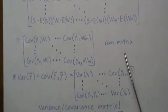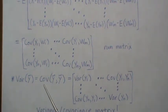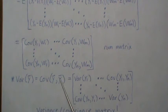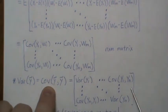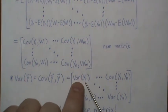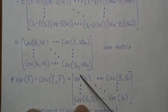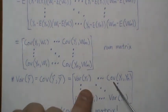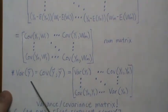The variance of a random vector y — the covariance of y with itself — produces an n×n matrix. The diagonal elements are all variances (cov(y_i, y_i) = Var(y_i)) and the off-diagonal elements are covariances. This is the variance-covariance matrix for the vector.